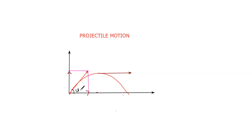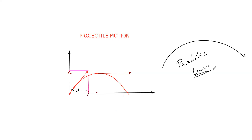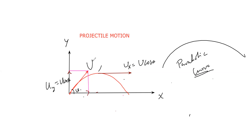Many of you might be wondering what this diagram is. This kind of path is a parabolic path or a parabolic curve. I will tell you a lot of examples but first let us focus on this diagram. UY is equal to U sine theta and UX is equal to U cos theta. This is my U, so UX is equal to U cos theta — that is the parallel one.